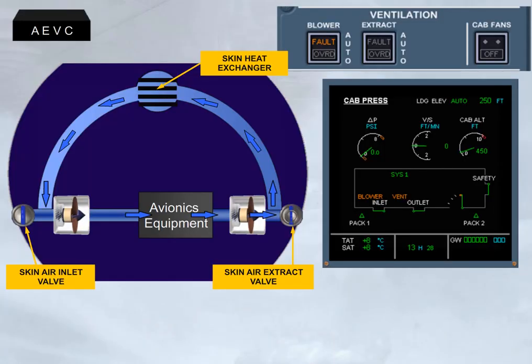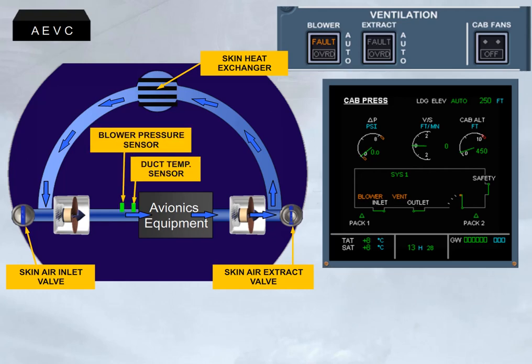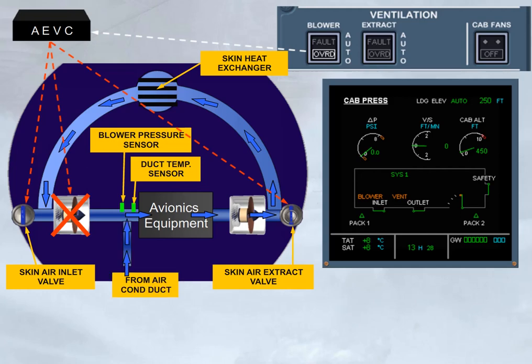A fault light comes on the related push-button switch in case of a blower flow problem or a duct overheat. Setting that push-button switch to override allows the ventilation system to be reconfigured by activating the closed circuit configuration, by stopping the blower fan, and by adding air from the air conditioning duct through an air conditioning inlet valve.